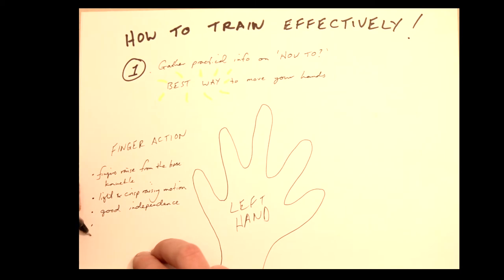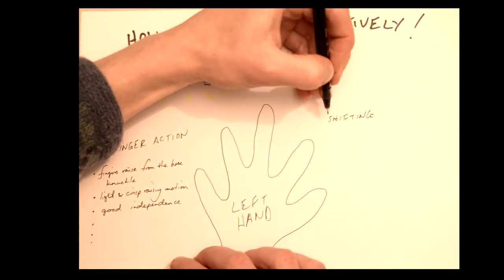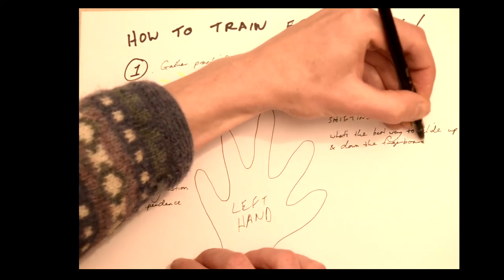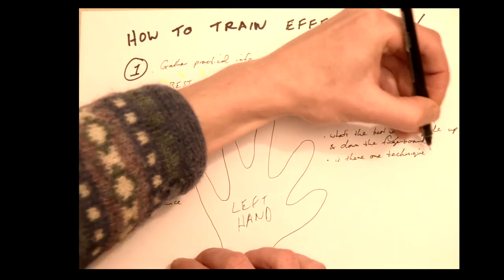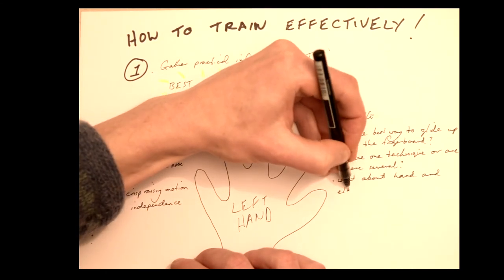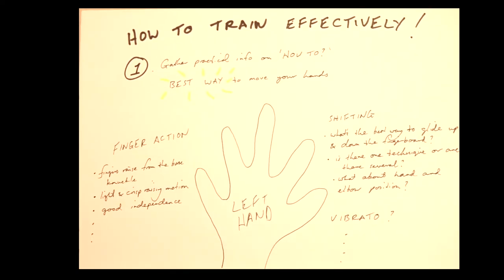Or, to use another example, if we're talking about shifting, we'll need to be able to answer questions like, what's the best way to glide up and down the fingerboard? Is there one technique or are there several? What about hand and elbow position? What are the answers for, say, vibrato? What's the technique and how do we train it?